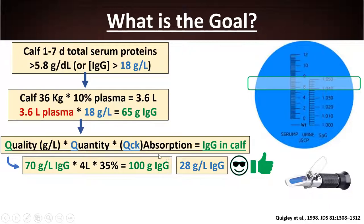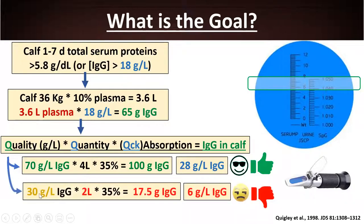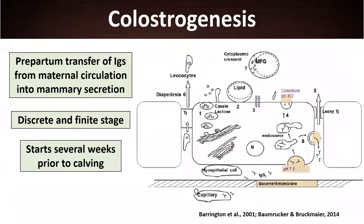Dividing 100 grams by the plasma volume of 3.6 liters gives a concentration of 28 grams per liter — an excellent outcome. A very bad scenario: feeding low-quality colostrum at 30 grams per liter and insufficient quantity, even if fed within one hour, results in inadequate total IgG. The resulting plasma concentration would be very low, more than doubling the risk of that calf dying.